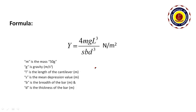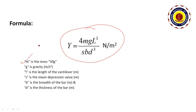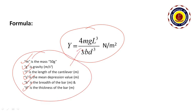For the calculation part, we use the formula: Y equals 4mgL³ divided by Sbd³. The unit is Newton per meter squared. Here, m is the mass of the weight being added (50 grams), g is acceleration due to gravity, L is the length of the cantilever, S is the depression value, b is the breadth of the bar, and d is the thickness of the bar. After substituting all values in the formula, we will get the Young's modulus value.